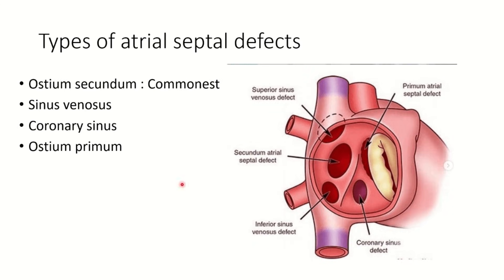There are four common types of atrial septal defect. The commonest is ostium secundum ASD. Then there is sinus venosus ASD — that is SVC type, IVC type — coronary sinus, and ostium primum. Ostium secundum ASD is the commonest and we are going to discuss mainly ostium secundum ASD, the central one.